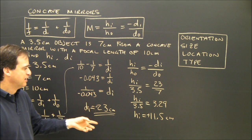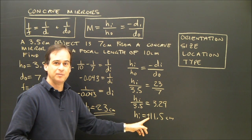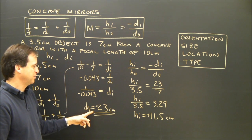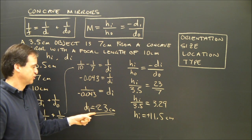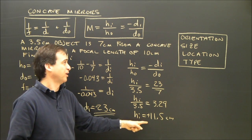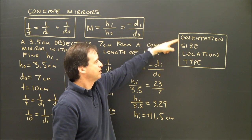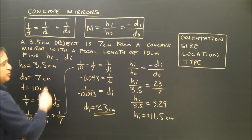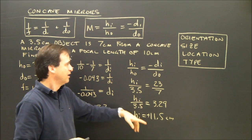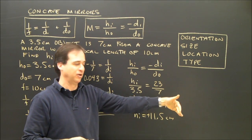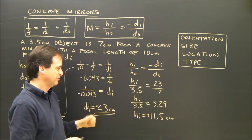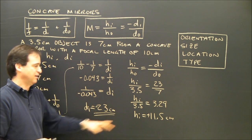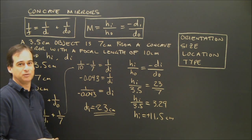The positive height of the image indicates upright. So the image is virtual — from the negative di — and upright, from the positive hi. The size is larger because the image is 11.5 cm and the object is 3.5 cm. The location is on the opposite side of the mirror because di was negative. The type is virtual, which both the negative distance and the upright orientation confirm.